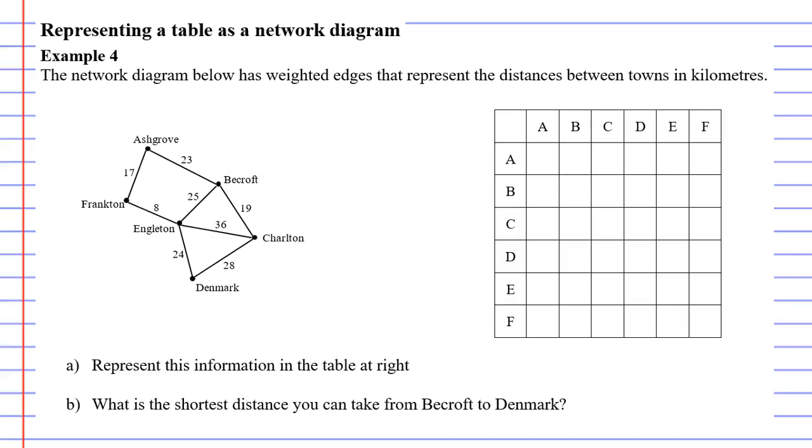In this video we're going to complete example 4. This time we're representing a network diagram as a table, and what's a little different is this network diagram has weighted edges. In case you've forgotten what weighted edges are, basically they are numbers that are next to edges and they represent something. In this case they represent the distances between towns in kilometers.